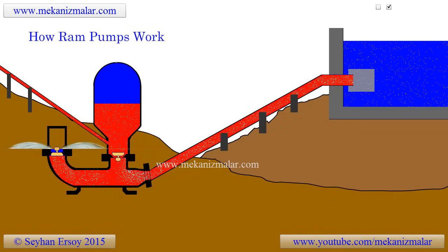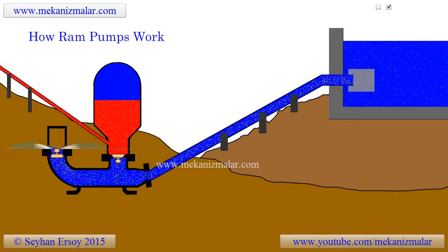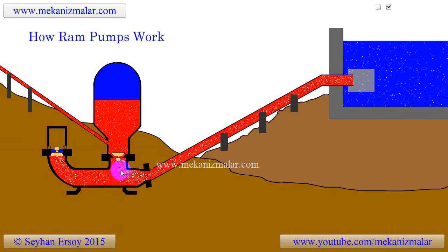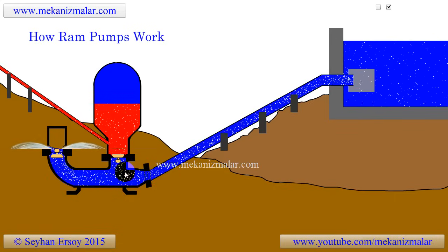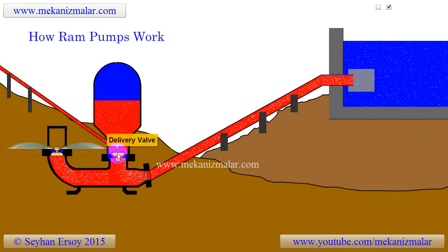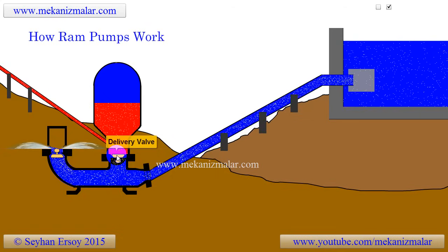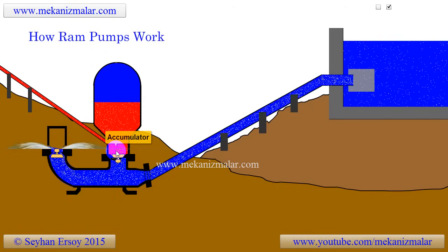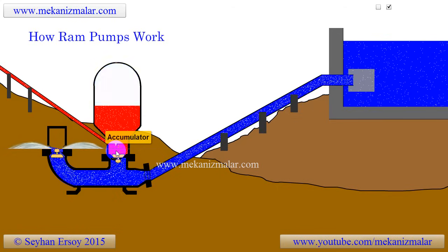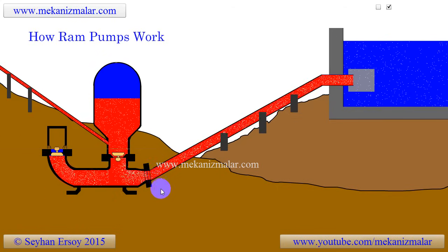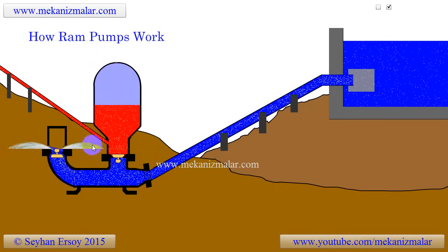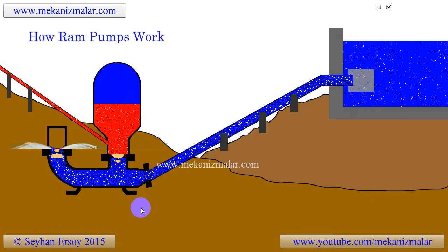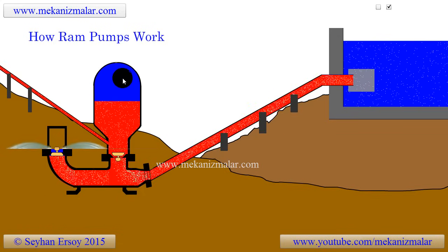Now let's go back to our discussion. The increased water pressure within the pipes must be relieved to prevent damage to the system — this is done by the delivery valve. The high pressure in the inlet pipes opens the delivery valve, which directs the pressurized water to the accumulator compartment and the delivery pipe at the same time. While the water level is rising inside the accumulator, the air pressure trapped above increases.